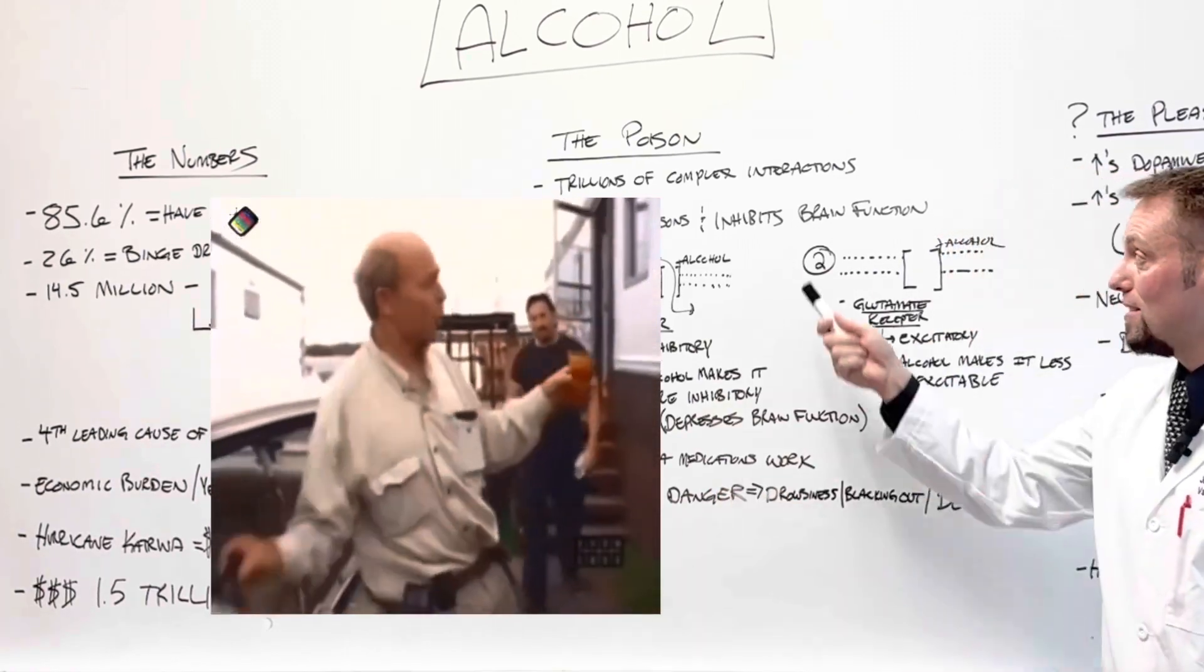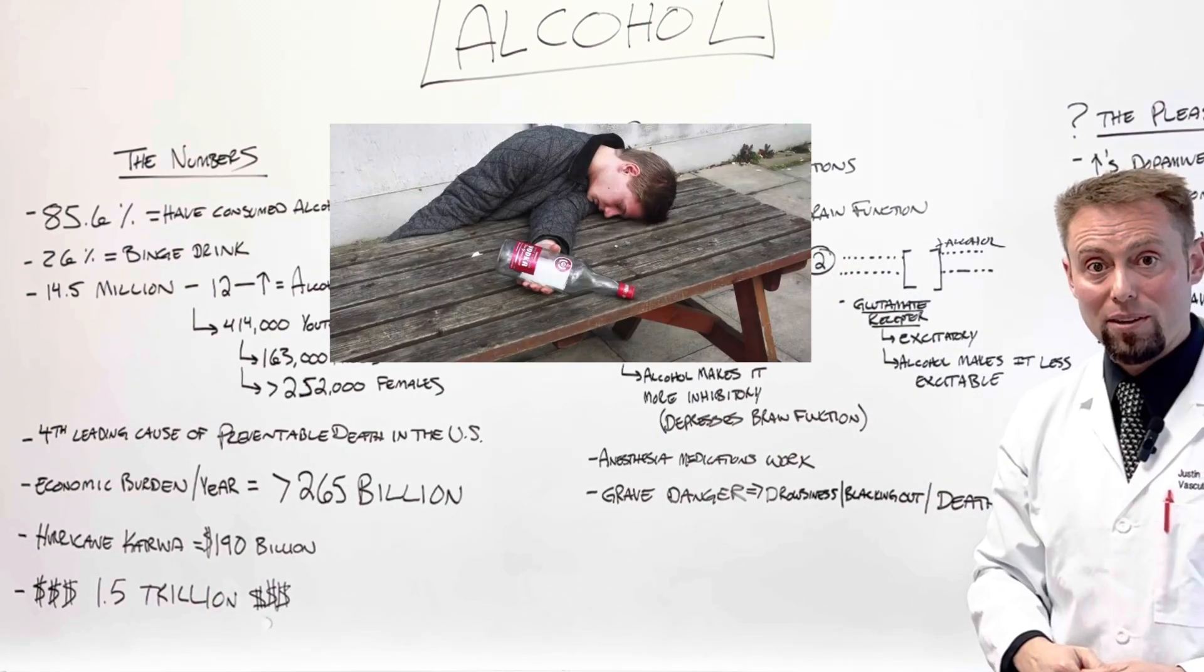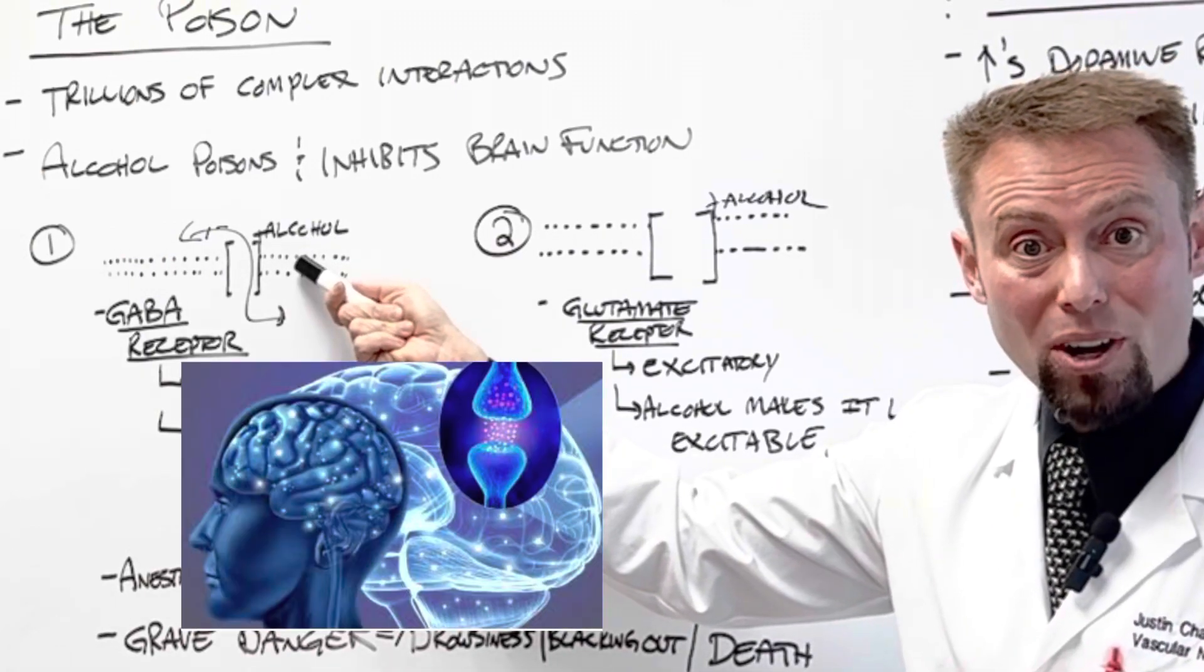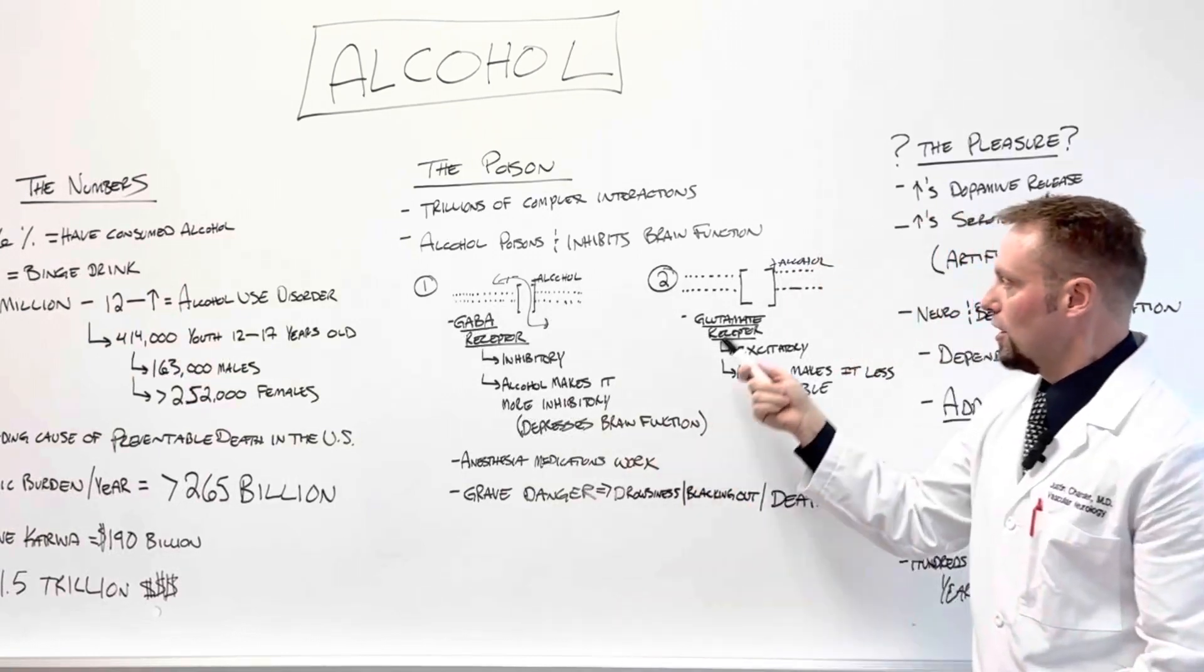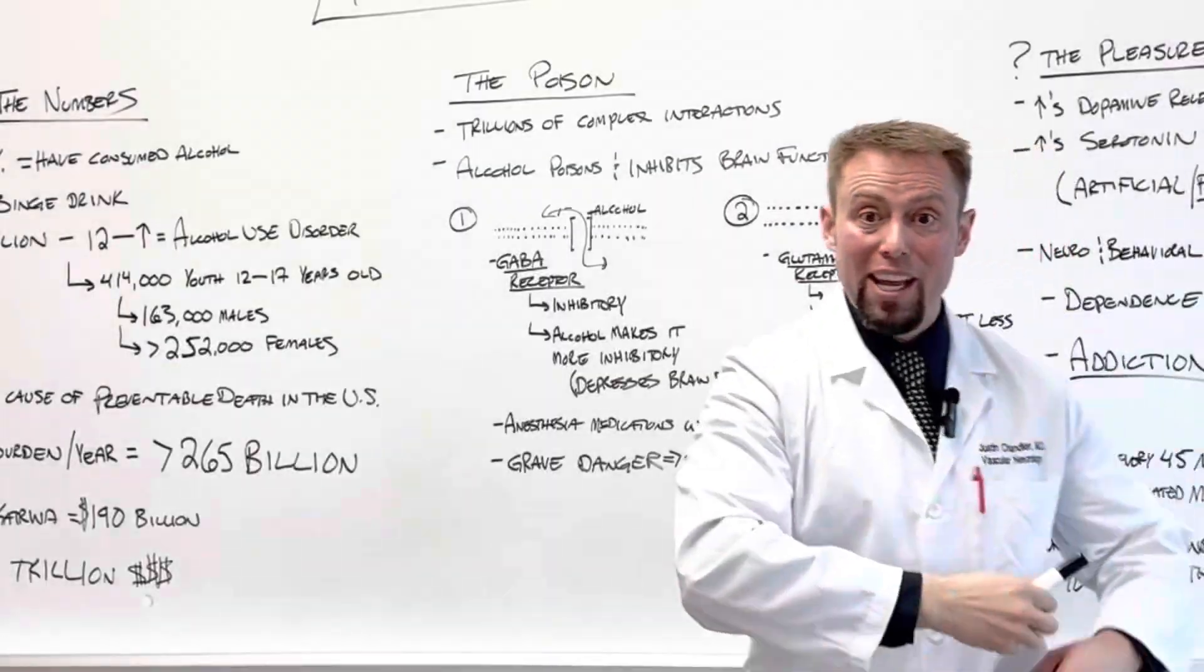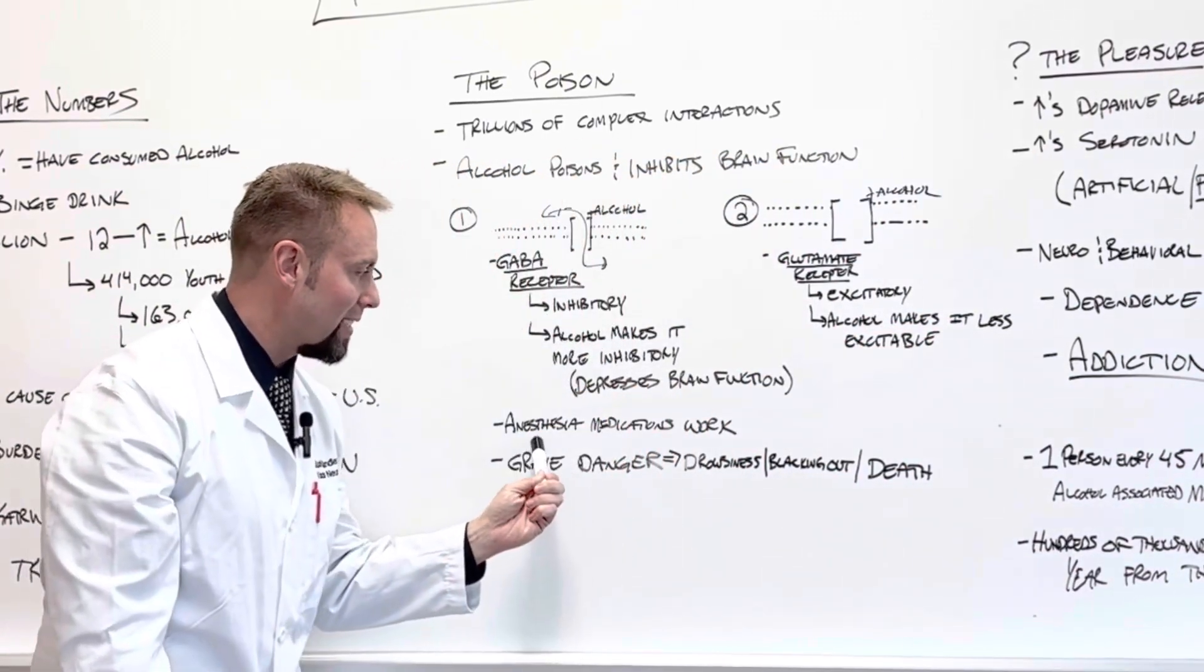In fact, you may have even seen somebody that their brain function has been inhibited so bad that it's made them blackout or pass out. GABA receptors get bound by the alcohol. It leads to increased inhibition. Glutamate receptors, alcohol binds to them. It decreases their excitability. And this is also how anesthetics work.